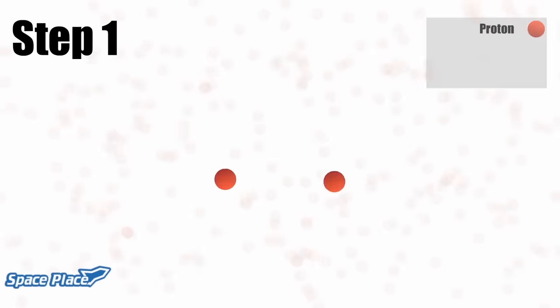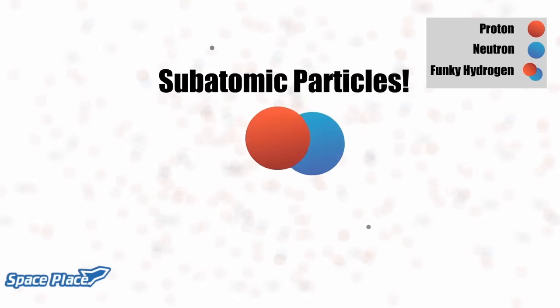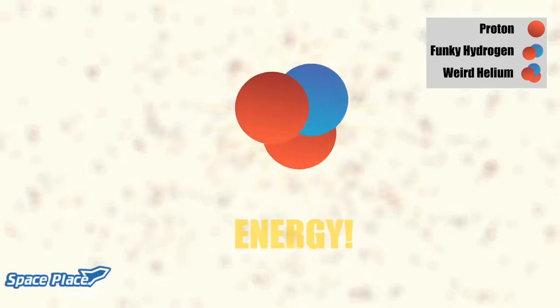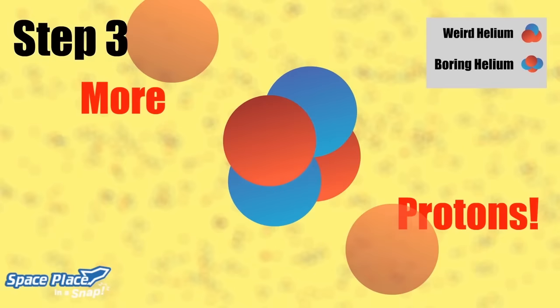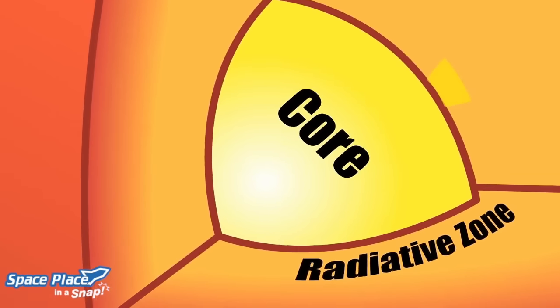This process, called nuclear fusion, releases energy while creating a chain reaction that allows it to occur over and over again. That energy builds up. It gets as hot as 27 million degrees Fahrenheit in the sun's core.